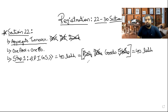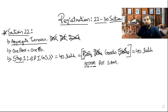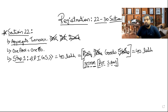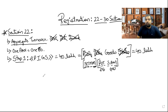Which states disqualify you from the 40-lakh limit? Remember 'NTMM': Nagaland, Tripura, Manipur, Mizoram. Also remember 'PUTSAM': Puducherry, Uttarakhand, Telangana, Sikkim, Arunachal Pradesh, Meghalaya. If you are NOT in any of these states and satisfy all PIGS conditions, you get the 40-lakh threshold limit under Step 1.